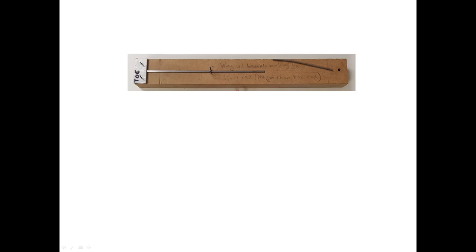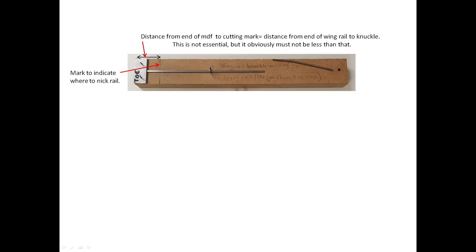Firstly, it ensures that the bend line is perpendicular to the length of the rail, which is essential. Secondly, if the cutting mark on the jig is correctly located, the centre of the bend will be exactly at the correct distance from the end of the rail.